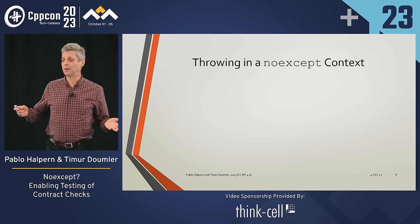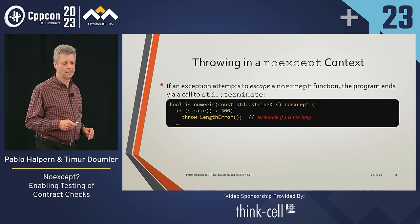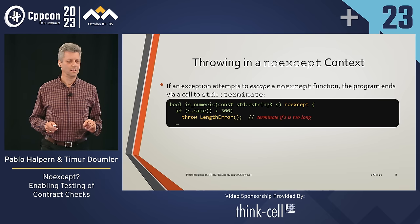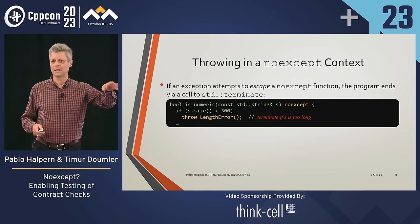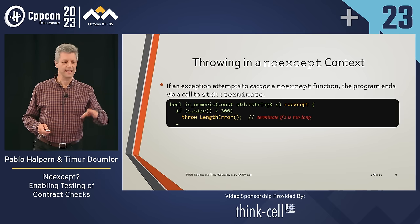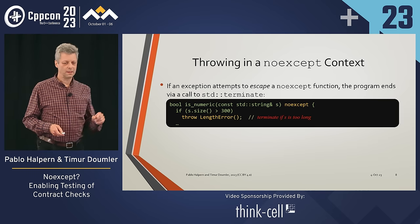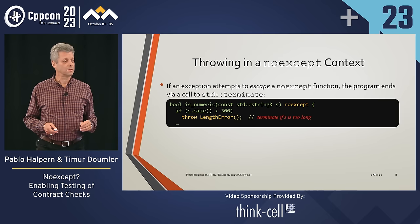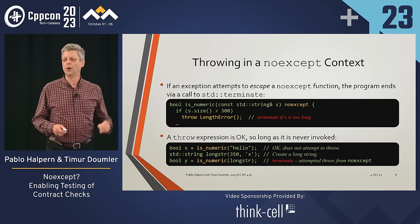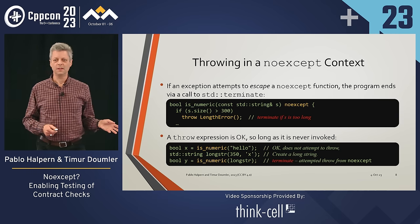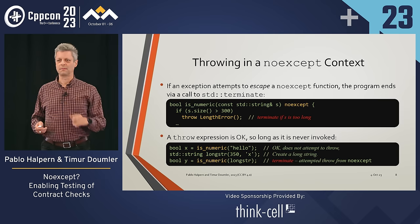What happens if you're inside a noexcept function and something does throw? If an exception tries to escape, std::terminate is called, which ends your program. You are allowed to do some cleanup before the program exits, but you cannot continue. This means it's okay to have a throw expression inside a noexcept function, provided you never actually hit the condition that causes the exception. But if you do hit that condition, the program will terminate.